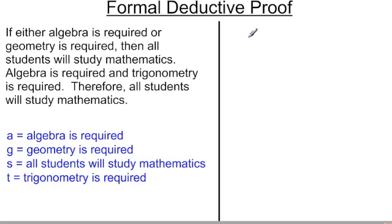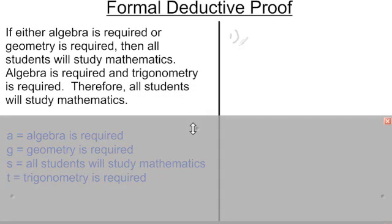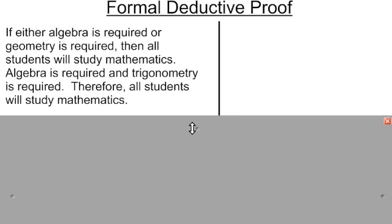So let's say we have an argument that looks something like this: if either algebra is required or geometry is required, then all students will study mathematics. From an outward appearance, this is a fairly simple argument — it's not something you would have to spend a whole lot of time figuring out whether it's actually valid or invalid. However, arguments can be much more complex than this. What we're going to do is take this simple argument and deconstruct it with a formal deductive proof to actually show that this will work and is valid and structured.